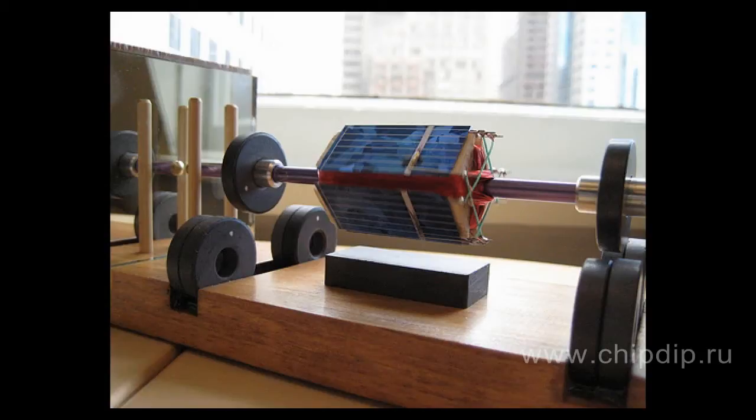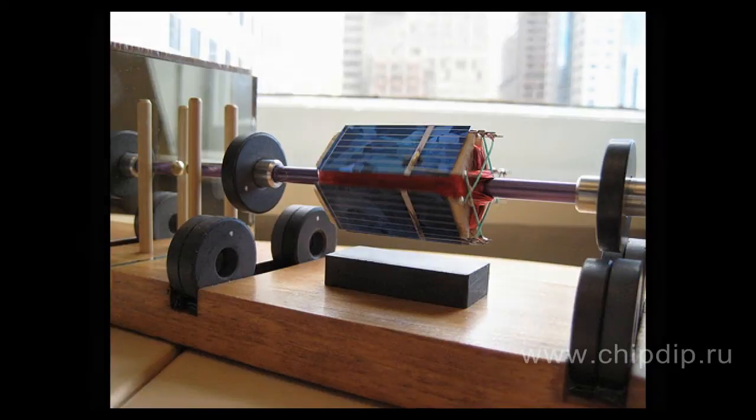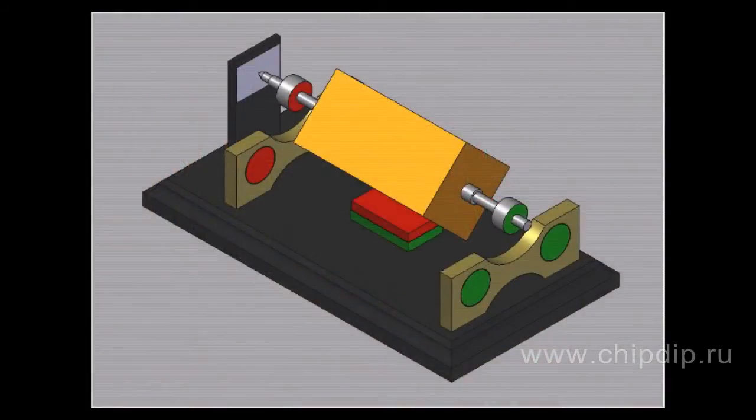The mode of operation of such an engine is simple. Light falls on one of the solar batteries. It generates electrical current that passes across the rotor winding. The current produces magnetic field that interacts with the magnetic field under the rotor. The interaction makes the rotor turn 90 degrees.